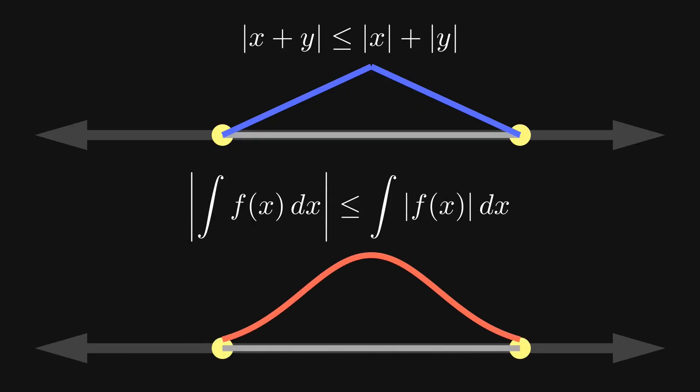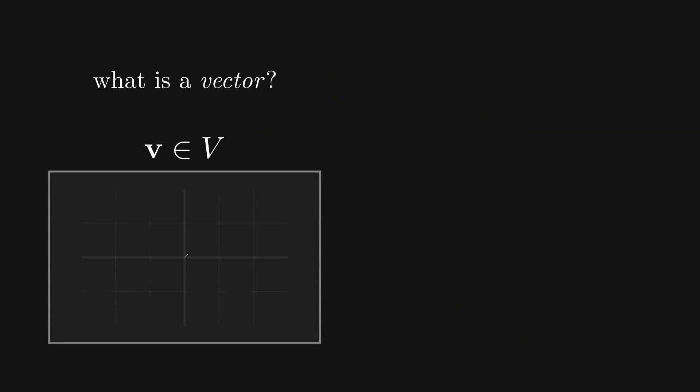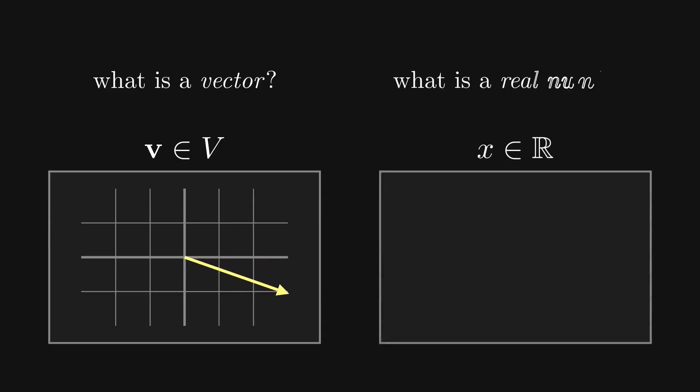So the answer to the question of what is a real number, ultimately comes in the same form as the answer to what is a vector. Outside of formal math, vectors are often described simply as objects with magnitude and direction. Just as many people describe real numbers as numerical values, an infinite string of digits.